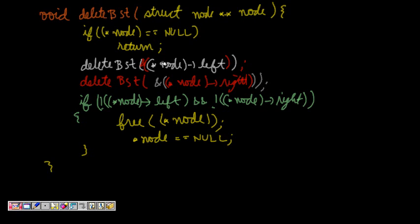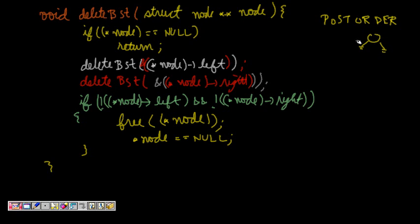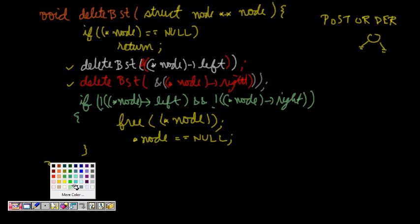We first call deleteBST on the left subtree, then deleteBST on the right subtree, and finally when I see that a node has both left and right children null, I free it. That's the base case — this is what happens with these two lines: if node->left and node->right are null, free the pointer. Let's see this with an example.